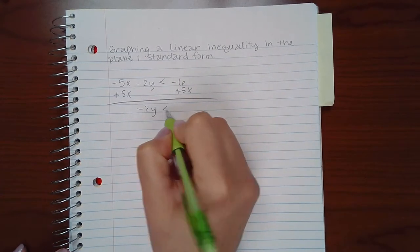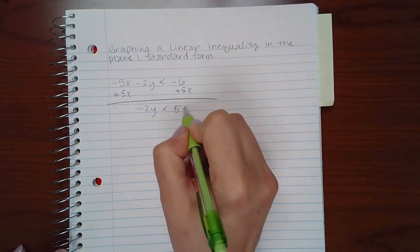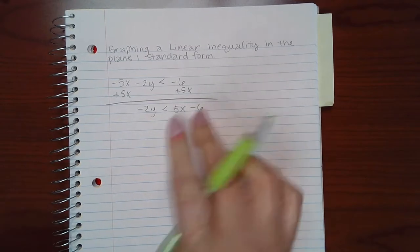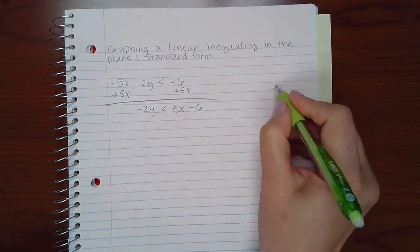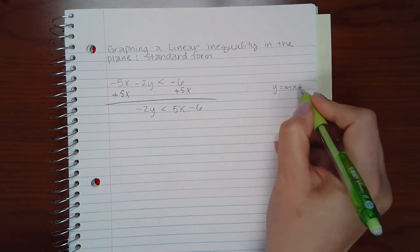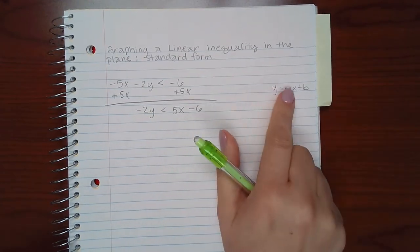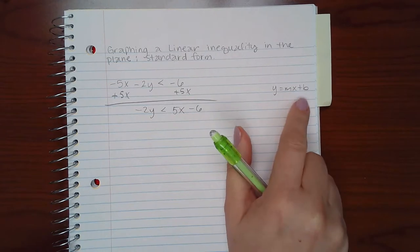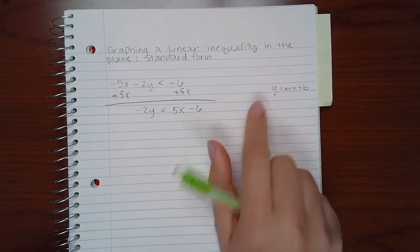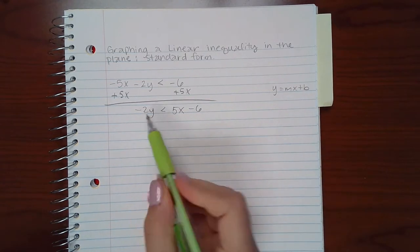So I have negative 2y less than 5x minus 6. Your x's always go in front. Remember, in order for me to graph, I need it to look like this on the right and this on the left. So I need just the y.